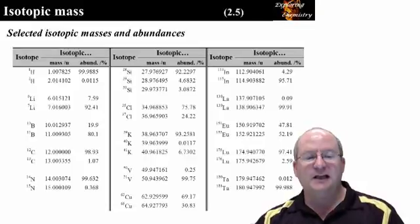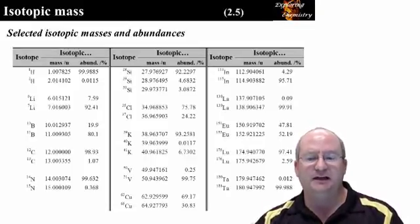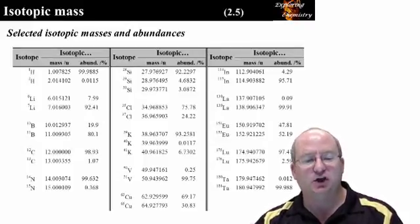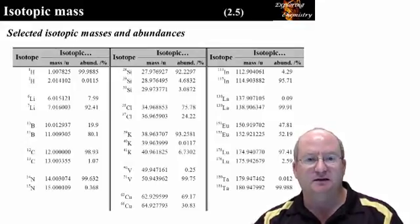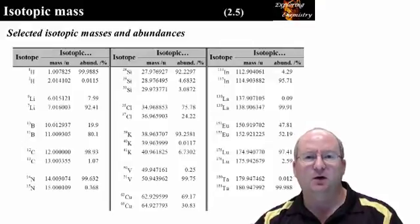This slide shows the isotopic masses and abundances that are tabulated in the best scientific resources. These are the books that research scientists would go to determine the mass and abundance of the isotopes of a given element. Note that the mass is still reported to six decimal places, but the abundance is reported to fewer than six. Looking carefully, we see that the abundance ranges from one to four decimal places, depending on the element. Why do you think this is the case?